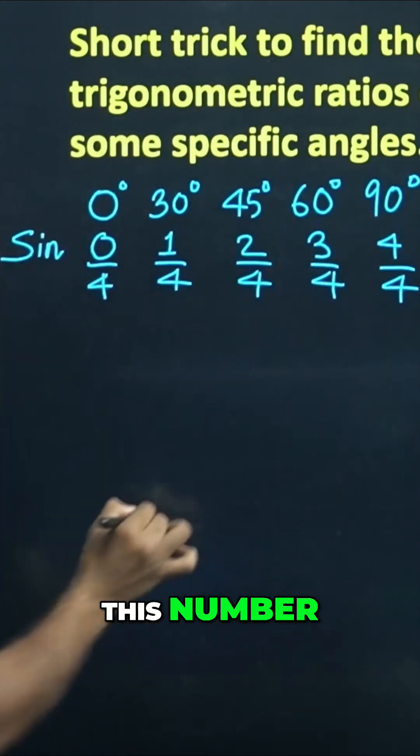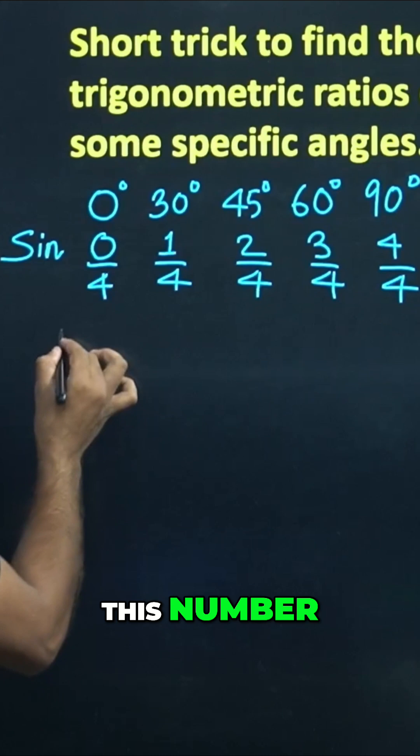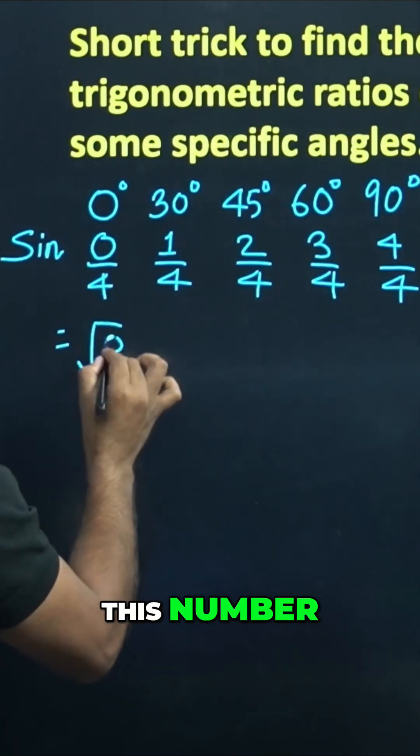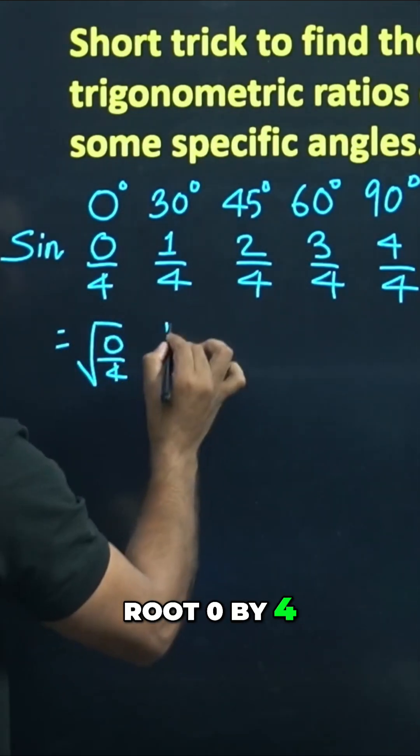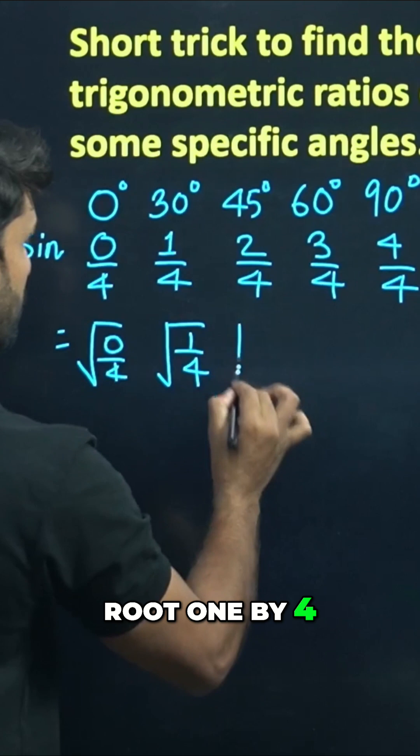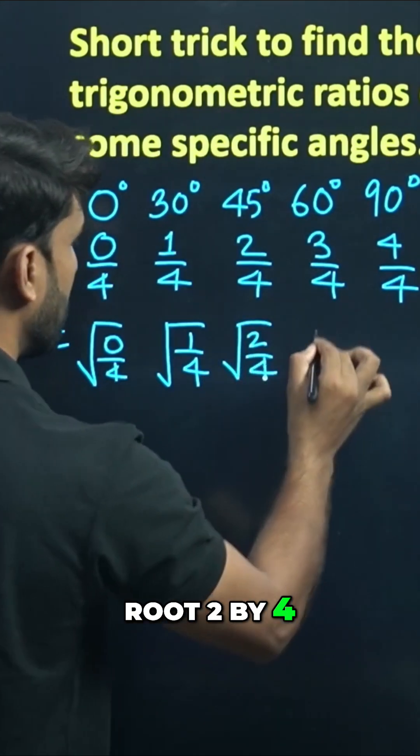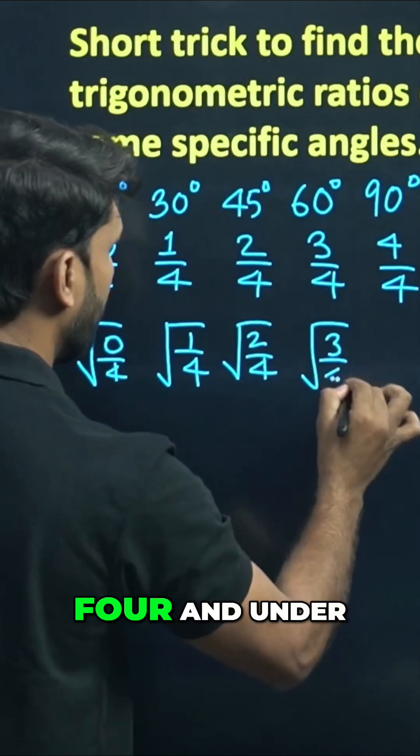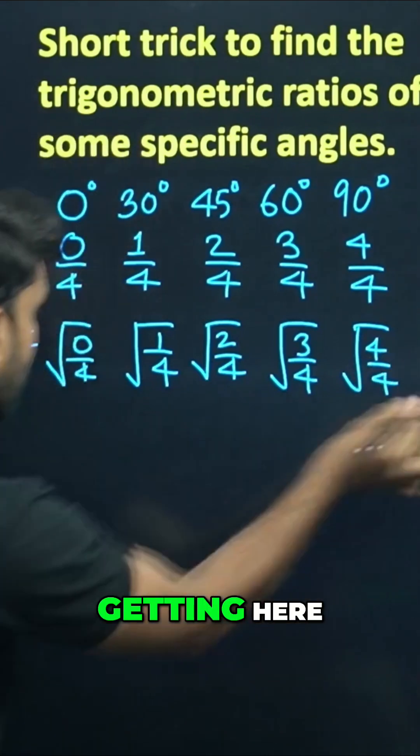And take the square root of these numbers. Once you take the root of all these numbers: root 0 by 4, root 1 by 4, root 2 by 4, root 3 by 4, and root 4 by 4. What are you getting here?